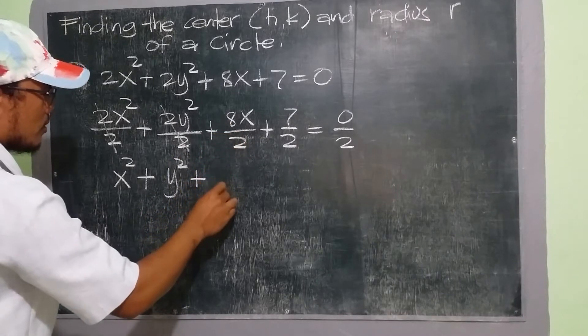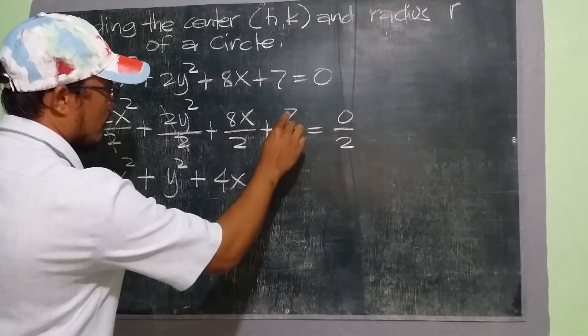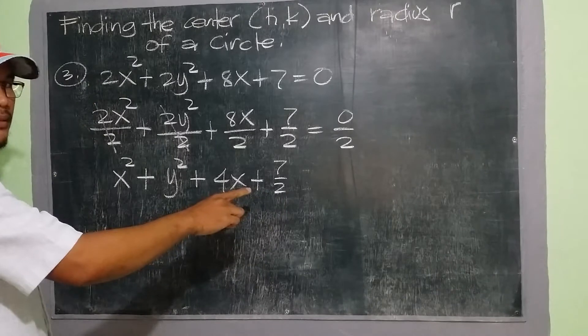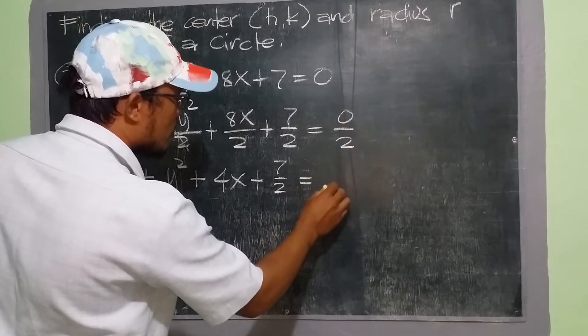Next, we have 8 divided by 2, that is 4, we have 4x. And then 7 divided by 2 is 7 divided by 2, so let's just leave it as it is, and then equal to 0 divided by 2 is still 0.